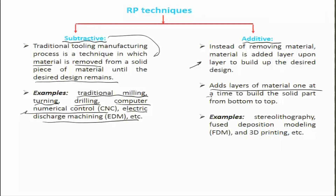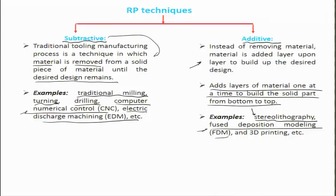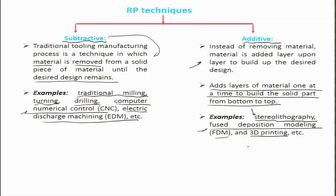Additive manufacturing adds layers of material one at a time to build the solid part from bottom to top. One widely used technique — particularly in micro-nano manufacturing in the electronics industry — is stereolithography. Then there is Fused Deposition Modeling (FDM), which uses single or two-phase polymer systems; the polymers are fed as wires obtained from billets and then extruded and deposited onto a bed along a computer-defined track. 3D printing in metals is another area of additive manufacturing used for rapid prototyping.